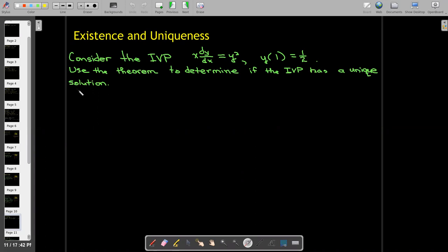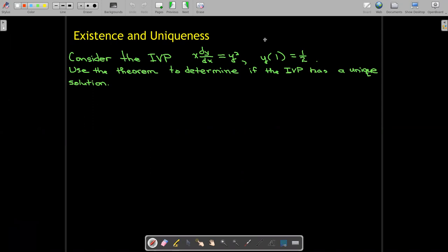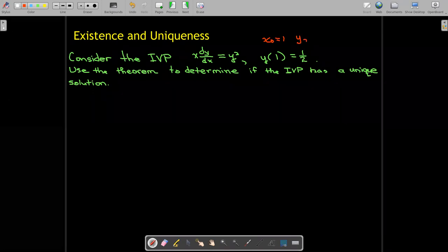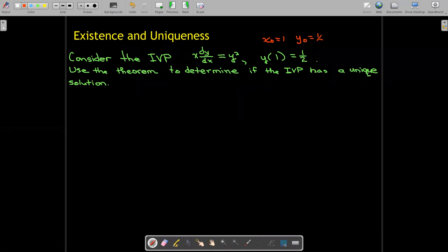And so that tells me that x₀ equals 1 and y₀ equals 1/2. So we need a rectangle containing (1, 1/2).